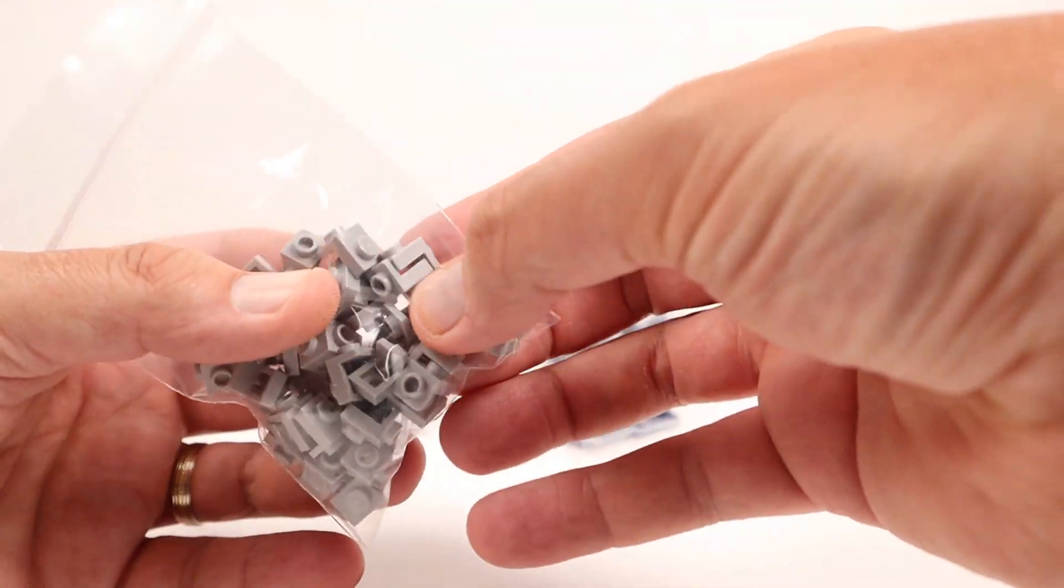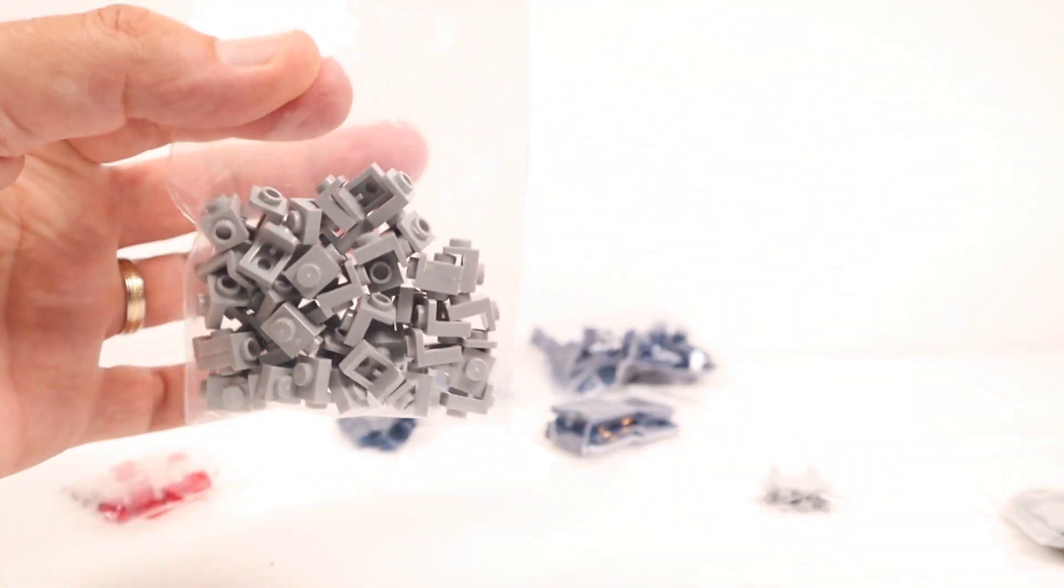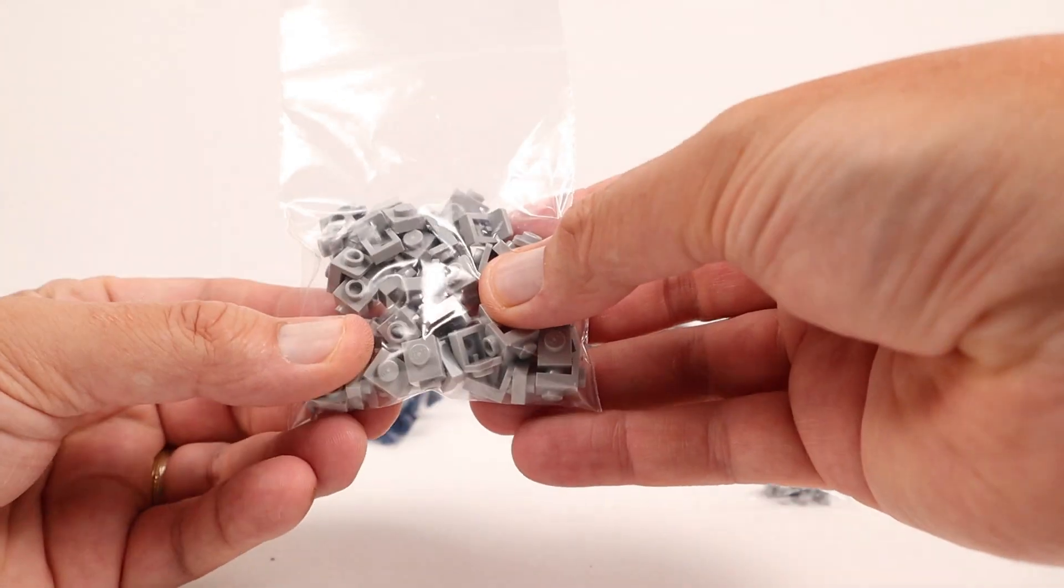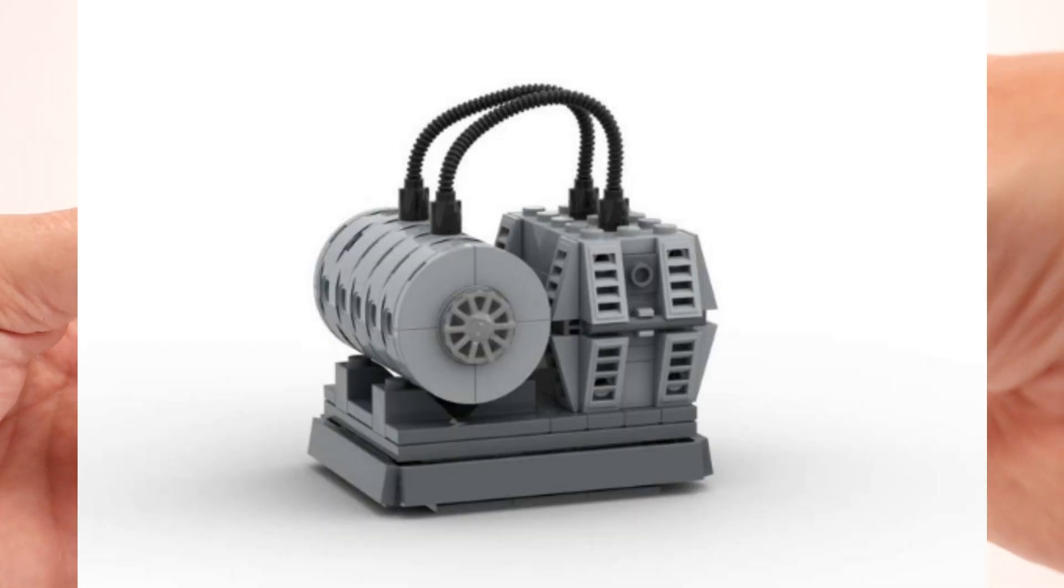These are bracket pieces I believe. One by one brackets. And we got a lot of these. This is also going to be used to build various greebling in the echo base, including these little fuel bays that I will show you a picture of right here.